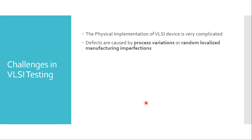Now let's understand some of the challenges in VLSI testing — what could go wrong and what kind of defects can we have. The physical implementation of a VLSI device is very complicated. At the time of recording this video, TSMC 5 nanometer technology and below are the latest technologies. At this technology node it's a very complicated process consisting of at least 15 to 20 metal layers with interlayer dielectrics in between, and a base layer consisting of extremely tiny transistors at nanoscale. A small piece of dust, abnormality, or irregular geometrical shape can result in a defect.